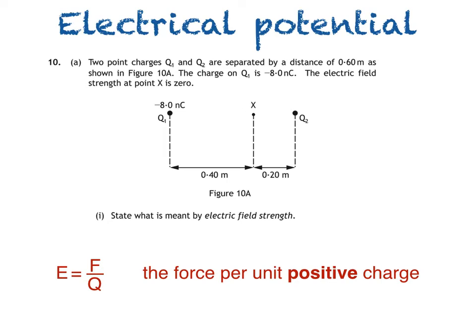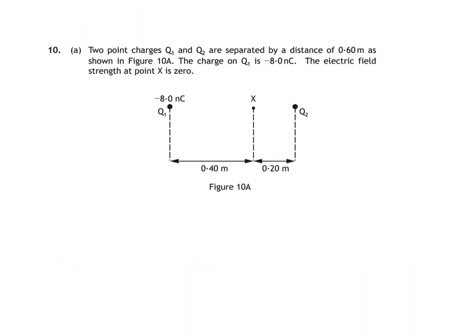The reason why it's the force per unit positive and not negative charge is a historical one that I'll be covering in an upcoming collaboration video on conventional current and electron flow. Look out for it when it's released. Here's part 2 of the question.